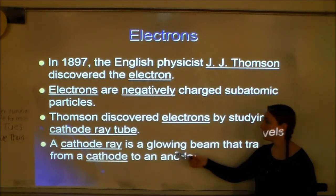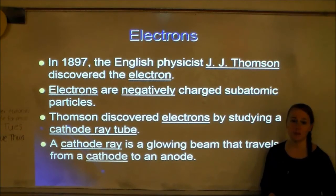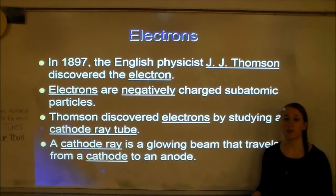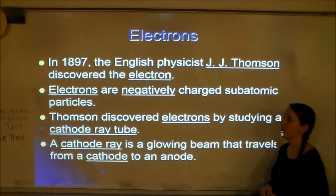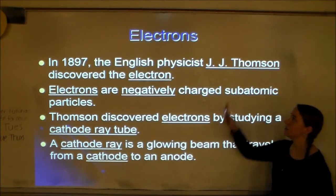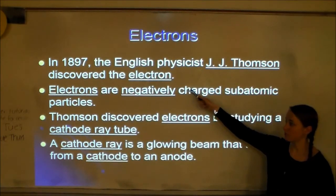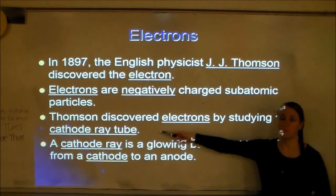A cathode ray is a glowing beam that travels from a cathode to an anode. J.J. Thompson studied this cathode ray tube, and we'll talk about how he discovered the electron over the next couple of slides.